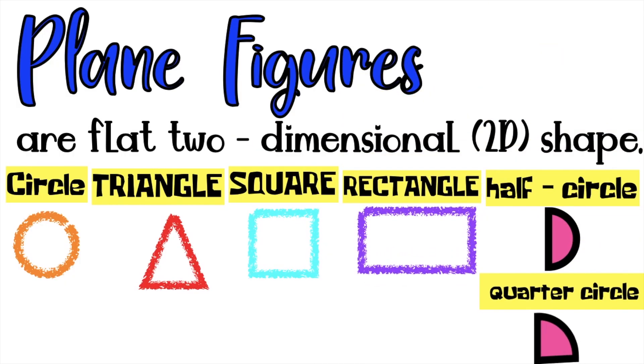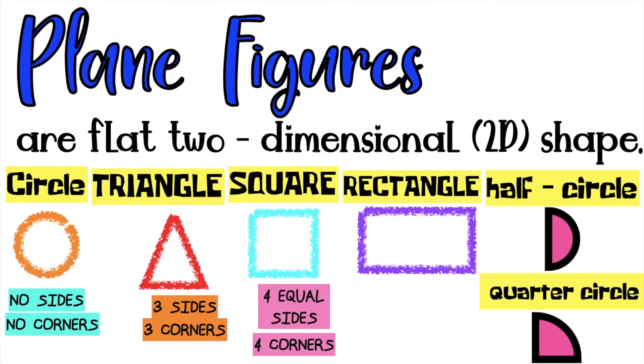and also a quarter circle. Always remember, circle, it has no sides and no corners. While triangle, it has three sides and three corners. While square, we have four equal sides and four corners. And rectangle, it has four sides, two sides are equal, and four corners. Is that clear?